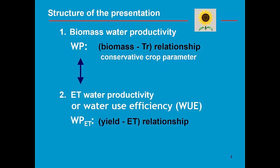It gives the relationship between crop yield and ET. It is a performance indicator which is far from a conservative crop parameter. It needs to be optimized. It tells me how well my system is producing in function of the water use.